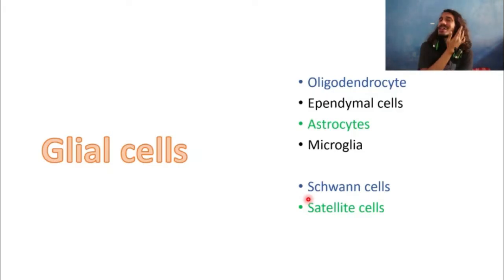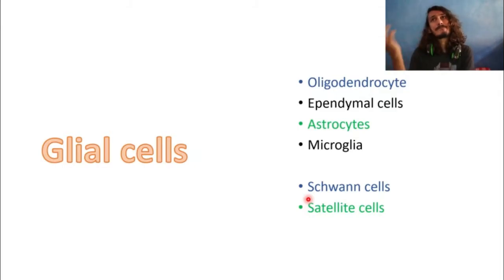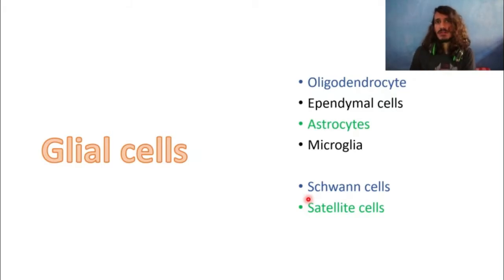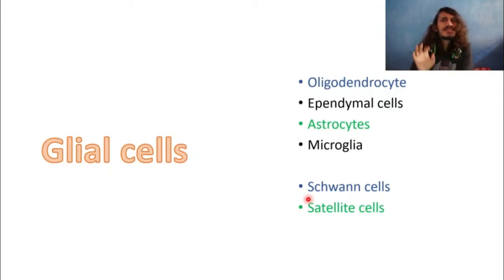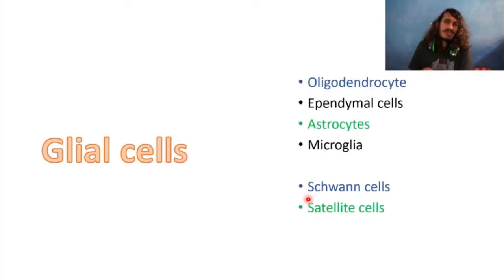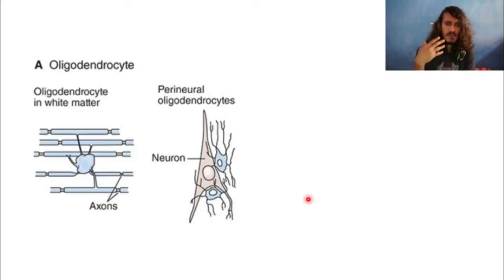Satellite cells are similar to astrocytes but are located in the peripheral nervous system, helping regulate the internal environment around neurons. Note that satellite cells in muscle tissue are different — they're involved in hypertrophy. The key glial cells to understand at minimum are Schwann cells, oligodendrocytes, and astrocytes.